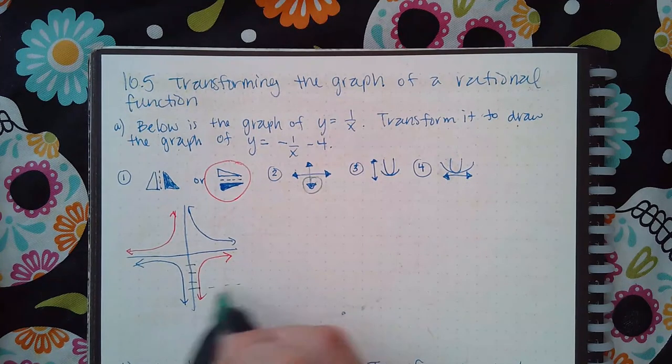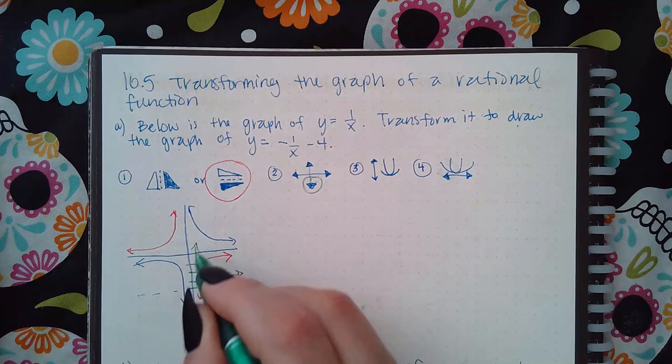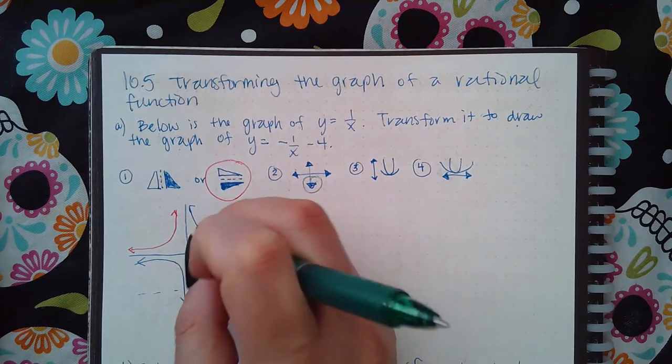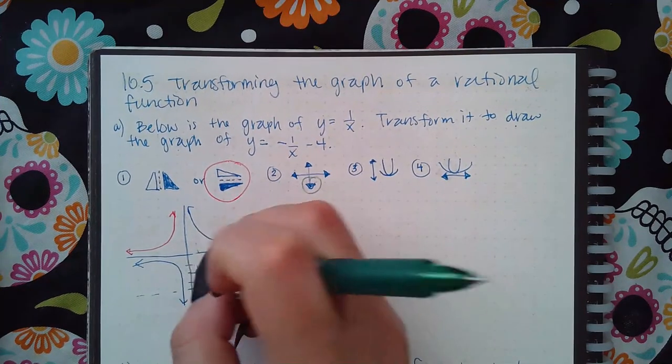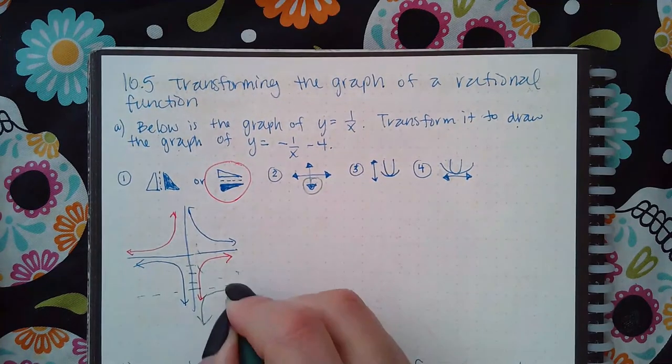It's going to now look like this in green. Oops, wrong one. It's going to take that red one and shift it down, so then the graph is going to look like this.